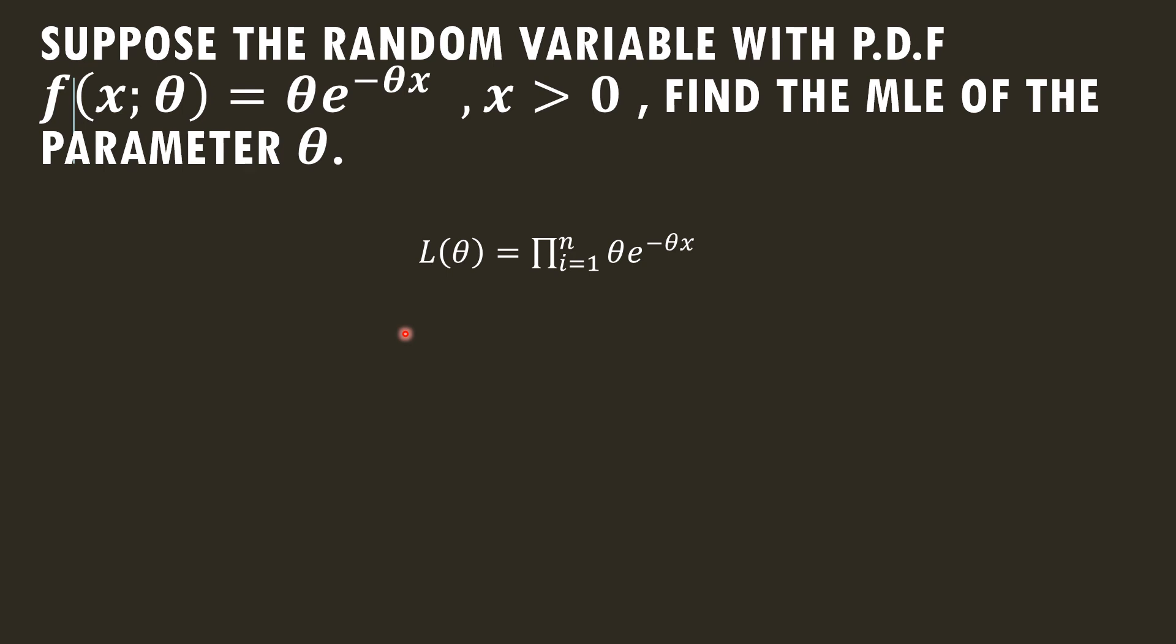First of all, we will find the likelihood function. For this, we have to introduce the product operator Π from i=1 to n, and this is the PDF θe^(-θx). Here θ is constant, so with the product operator it becomes θ^n.